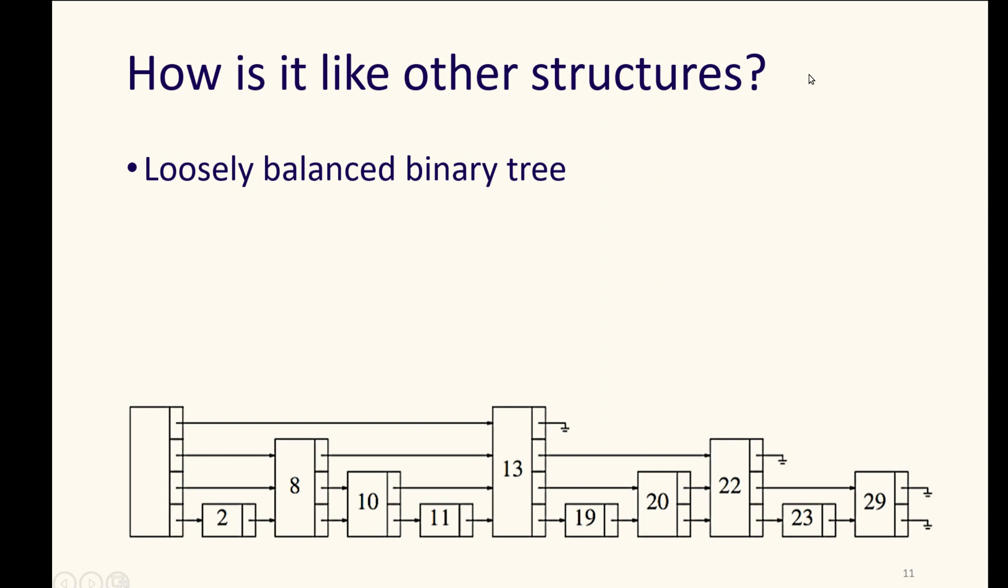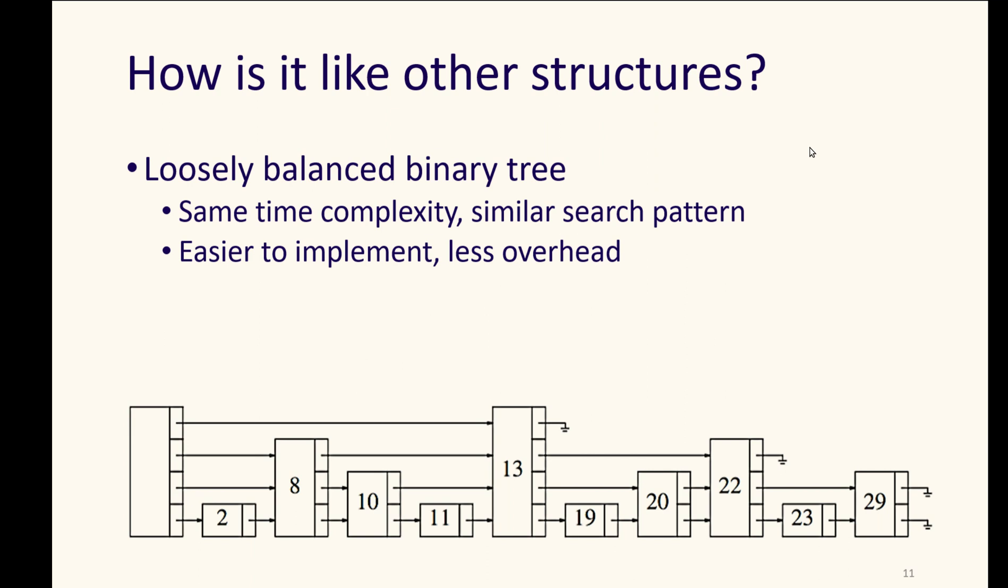This is actually pretty similar to some of the other data structures that we've looked at. It's like a loosely balanced binary tree, where you get to make those choices that might lead you to one half of the data or one portion of the data or another, sort of a left-right kind of choice as you go through and compare. It has the same time complexity as one of our loosely balanced binary trees, and a similar search pattern of stepping toward portions of the data, but it can be easier to implement and can take less overhead in terms of storage space than some of our binary search tree structures that we used and methods for balancing.